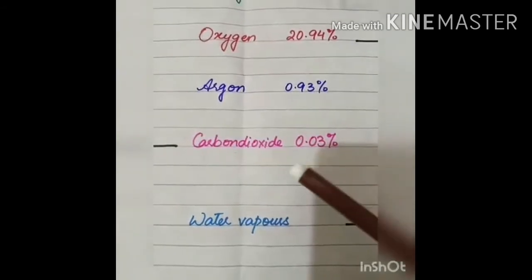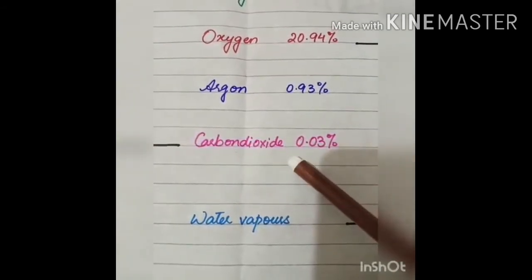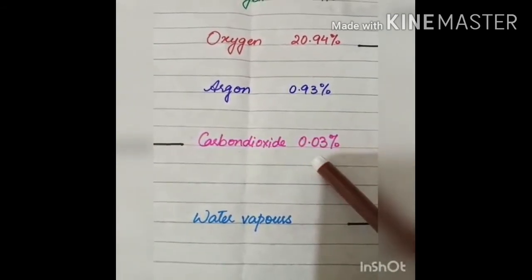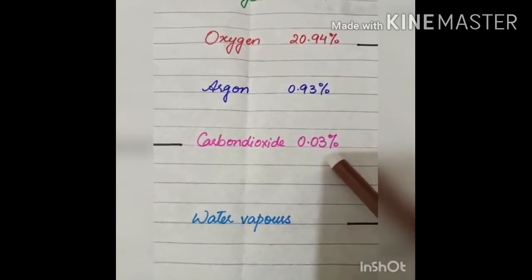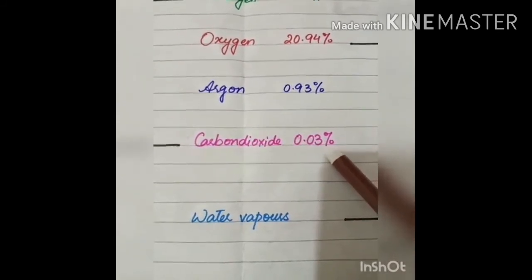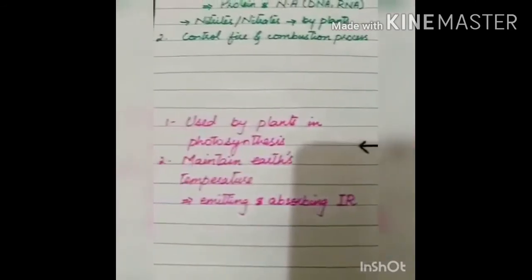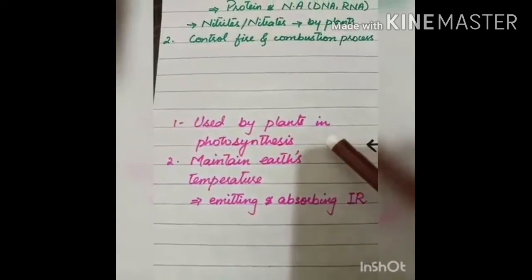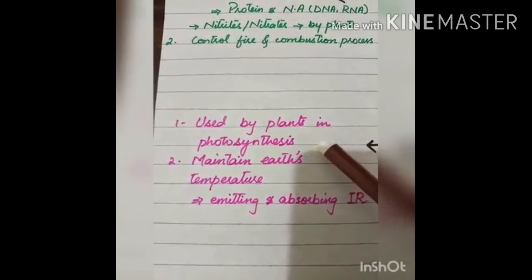The third gas is carbon dioxide. Although it is very less in composition, 0.03% only, but it is a very important gas. It is used by the plants in the process of photosynthesis.